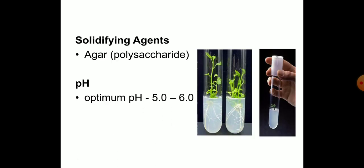Solidifying agents: Agar polysaccharide is used as a solidifying agent. Optimum pH between 5 to 6 is required for growth and development of cultured tissue.